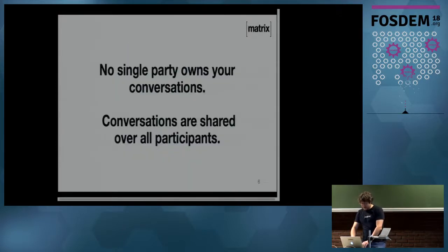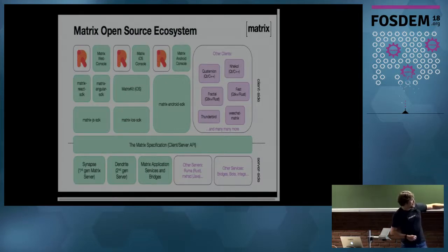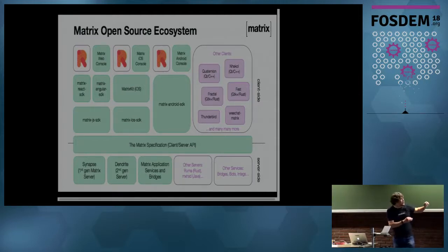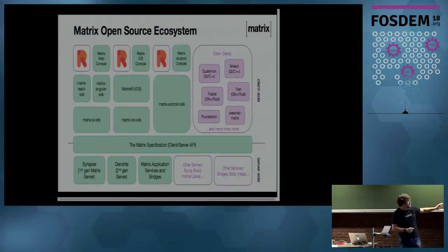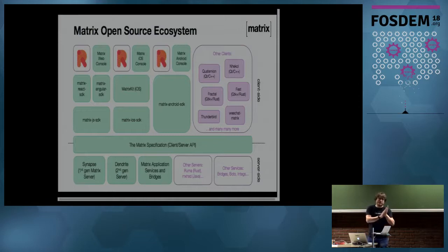I'm going to skip the boring stuff. Here's a new version of the Matrix ecosystem diagram showing a lot of third-party clients out there now. We've got the Matrix spec, servers, and clients from the Matrix.org team in green. But we've also got lots of community projects in purple: Neko, Keternian, Fest, Fraxel on GTK and Rust, Thunderbird, WeChat, many other clients, and also third-party community servers in Rust and Java. The Matrix ecosystem is growing, with the whole idea being to disrupt WhatsApp, Slack, and all these big silo services by building an open network for communication.